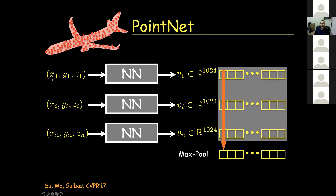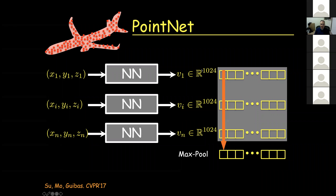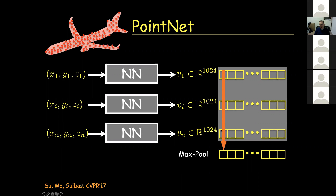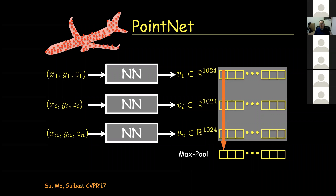What PointNet does is accept the x, y, z coordinates of each point in 3D space, then train a network to lift these three numbers into a 1024-dimensional space. For each point you get a high-dimensional vector, then you take the maximum or average of every coordinate across all points to produce one vector. If you have 30,000 points, at the end you get one vector of 1024 numbers by which you classify your shapes.